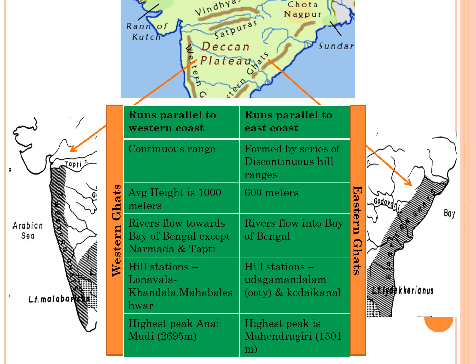The Deccan Plateau is further divided by the Western Ghats and the Eastern Ghats. The Western Ghats run parallel to the western coast in the form of a continuous range from south to north. The highest range of the Western Ghats is named Sahyadri and the average height is about 1000 meters. The Western Ghats form a major water divide in the Deccan Plateau region. Rivers rising from the eastern slope flow towards the Bay of Bengal. Rivers like Godavari, Krishna and Kaveri all rise in the Western Ghats and flow across the Deccan Plateau into the Bay of Bengal, except rivers like Narmada and Tapti which flow through rift valleys.